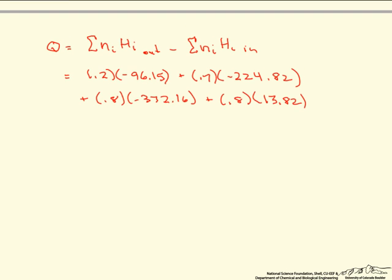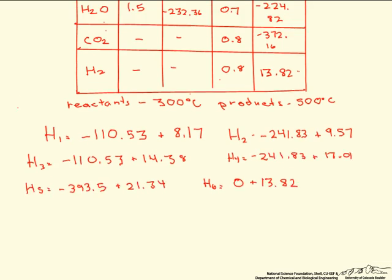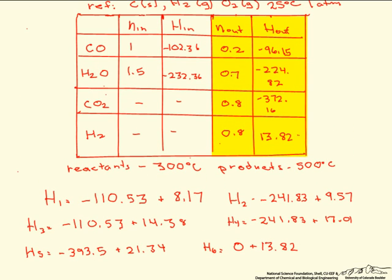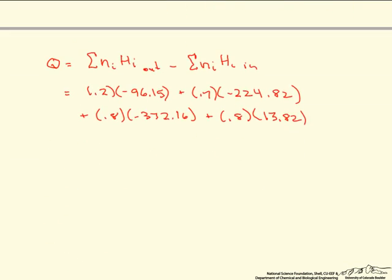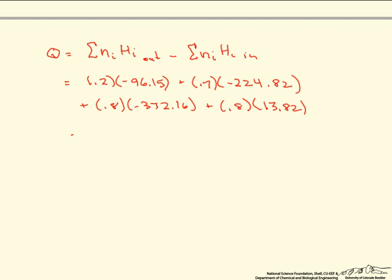And that's everything that came from the right side of our table, which are the products. And so now we subtract from that, and that's going to equal minus 12.6 kilojoules.